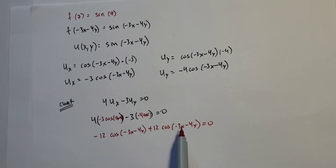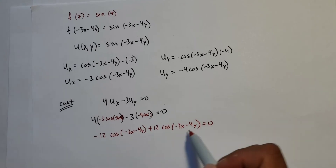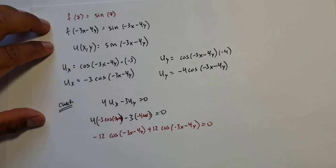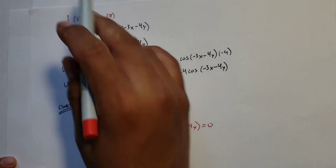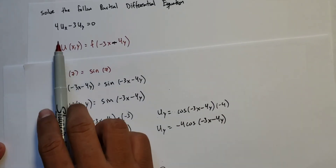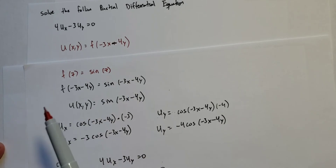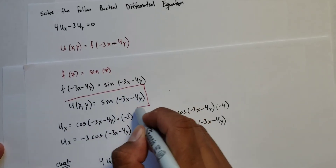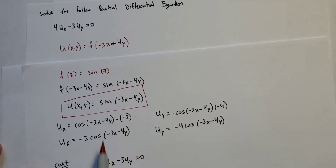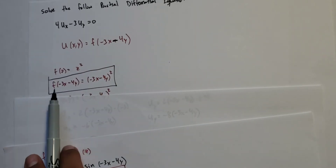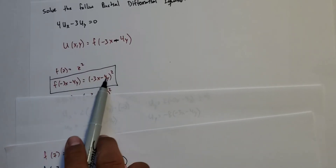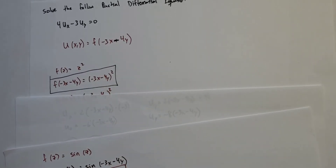Is that equal to 0? Yes — they're the same term; they cancel out. So again, we have another solution. Our general solution says any function evaluated at −3x − 4y works. Here we showed f(z) = sin(z) is one solution, and from the previous example, f(z) = z² is another solution.